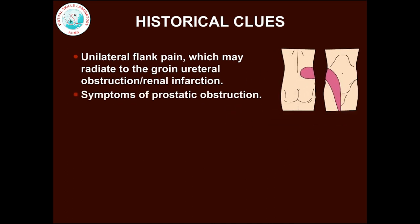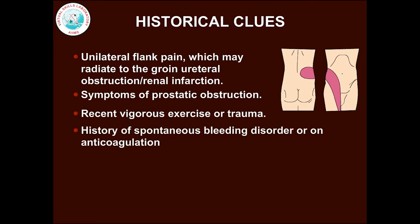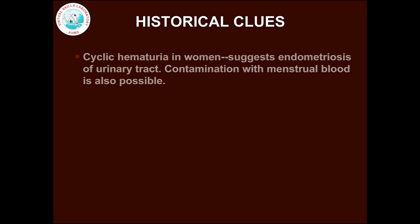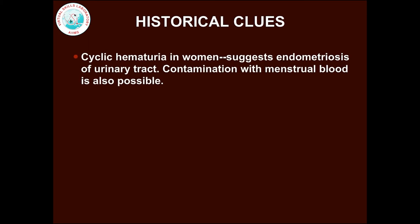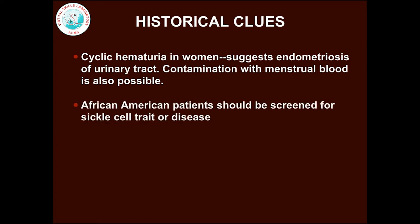Are there any symptoms of prostatic obstruction? Does the patient give history of recent vigorous exercise, trauma, spontaneous bleeding disorder, or is on anticoagulation? Cyclic hematuria in women suggests endometriosis of the urinary tract. Contamination with menstrual blood is also possible. African American patients should be screened for sickle cell trait or disease.